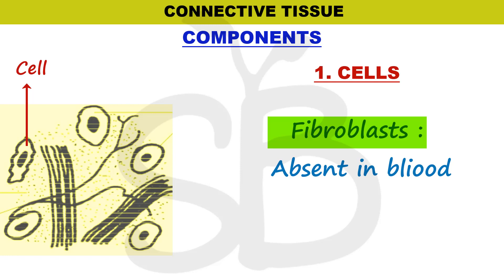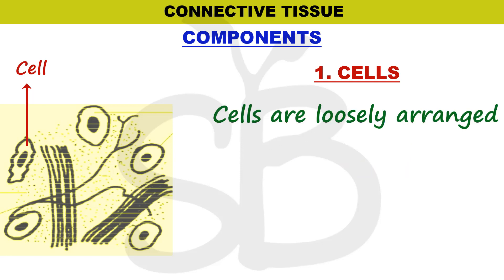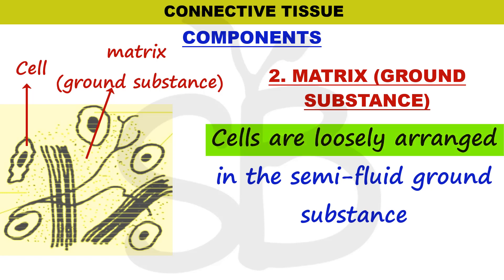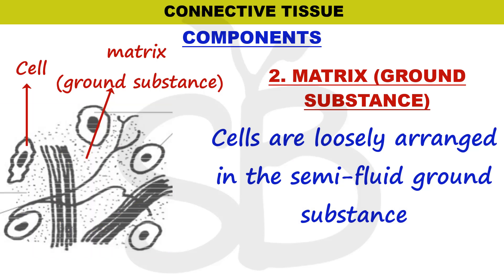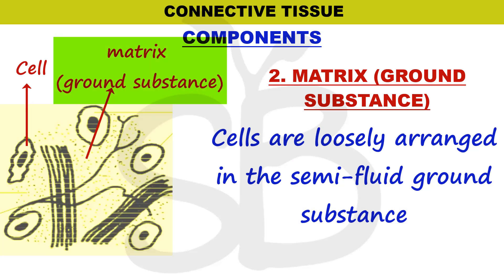This is an exception to note. When we learn about epithelial tissues, the cells are compactly packed. But in connective tissue, the cells are separated and embedded in a semi-fluid ground substance. This ground substance is called the matrix.